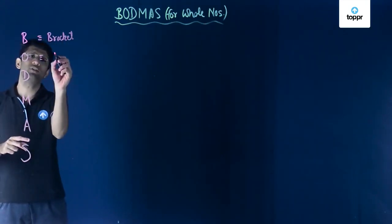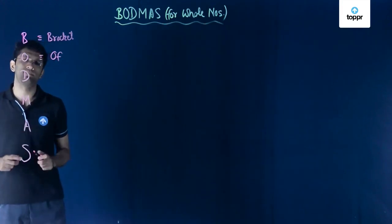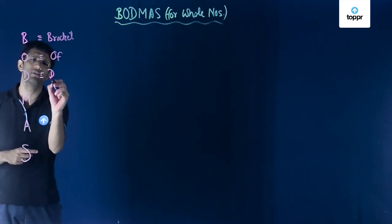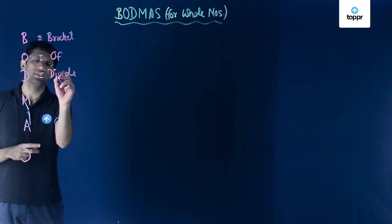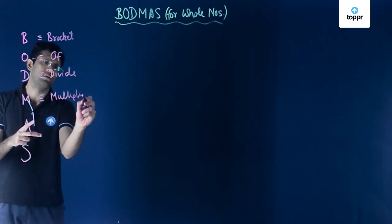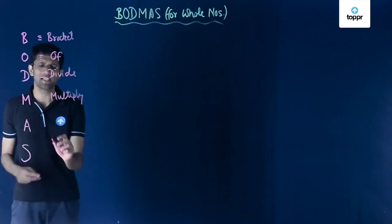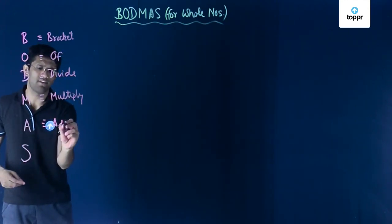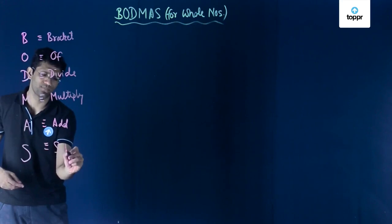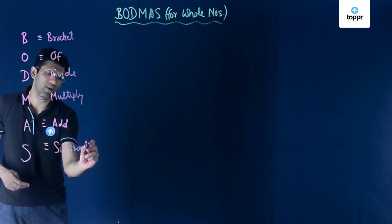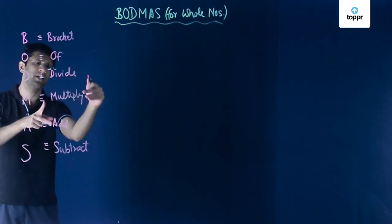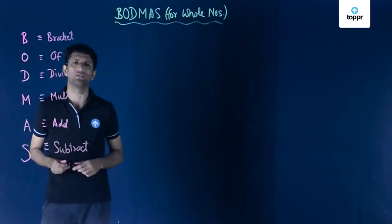O stands for the word 'of', D stands for the operation of division, M stands for the operation of multiplication, A stands for addition, and finally S stands for subtraction. So BODMAS stands for: Bracket, Of, Division, Multiplication, Addition, and Subtraction.